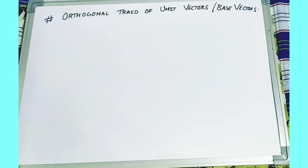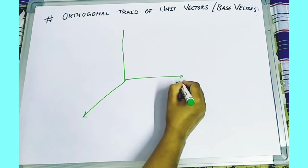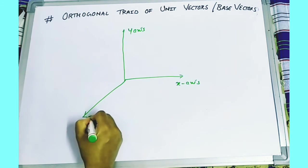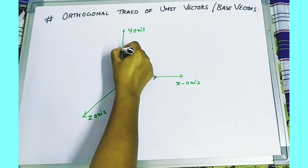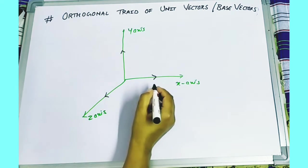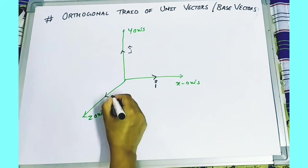Now we have seen the resolution of vectors. We are going to discuss the orthogonal triad or the unit vectors. What are orthogonal vectors and what is this orthogonal triad or base vectors? We consider the right-handed Cartesian coordinate system with x-axis, y-axis, and z-axis. In vectors, when three unit vectors are perpendicular to each other, the x-direction is represented with i-cap, y with j-cap, and z with k-cap.